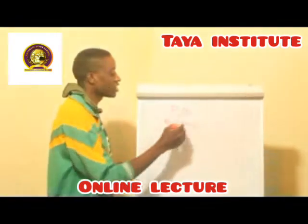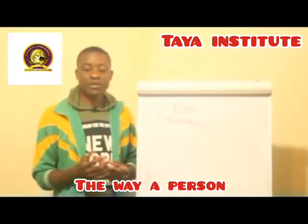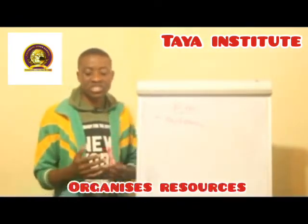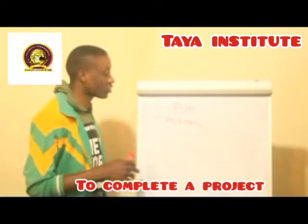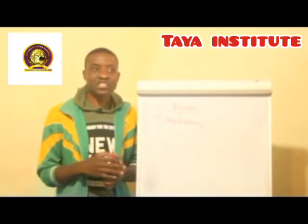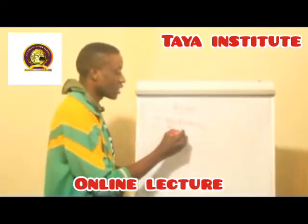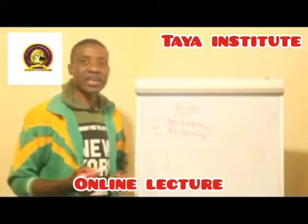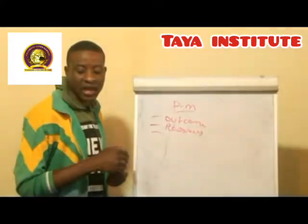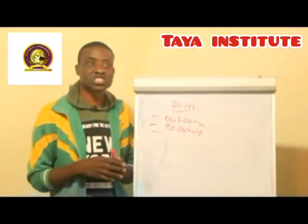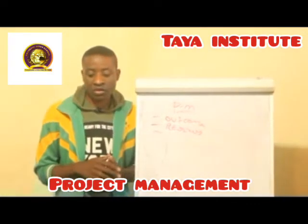In defining project management, you can say project management is the way a person organizes and manages resources that are necessary to complete a project. Project management is the way a person organizes resources in a way that will help us achieve the goals and the set objectives of the organization.